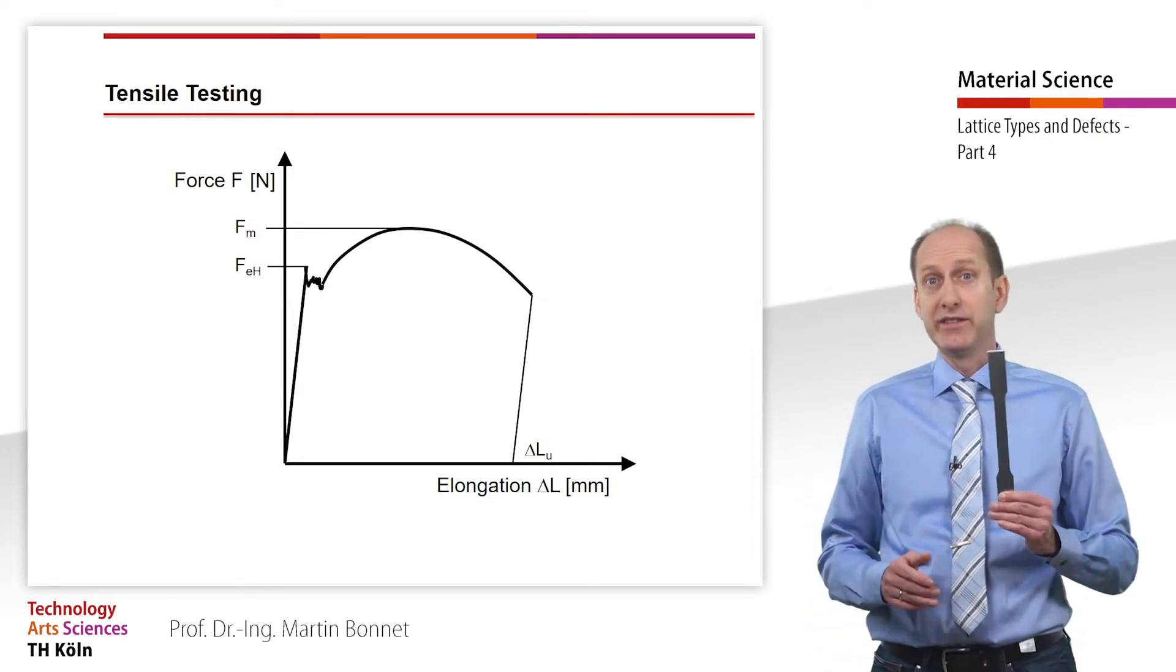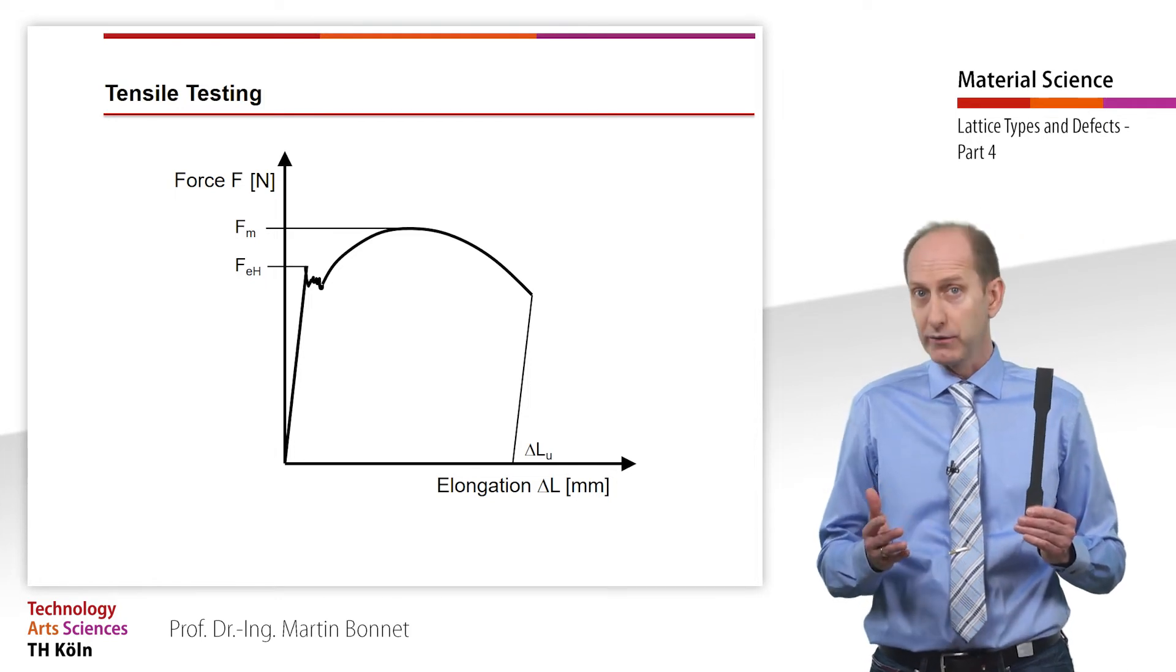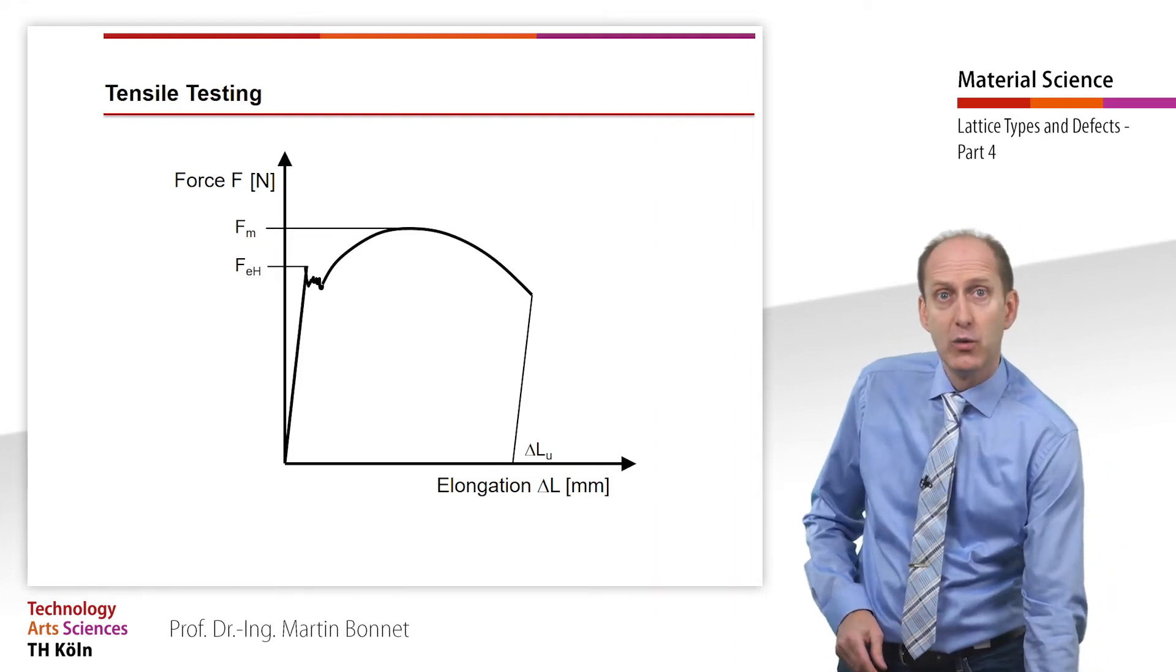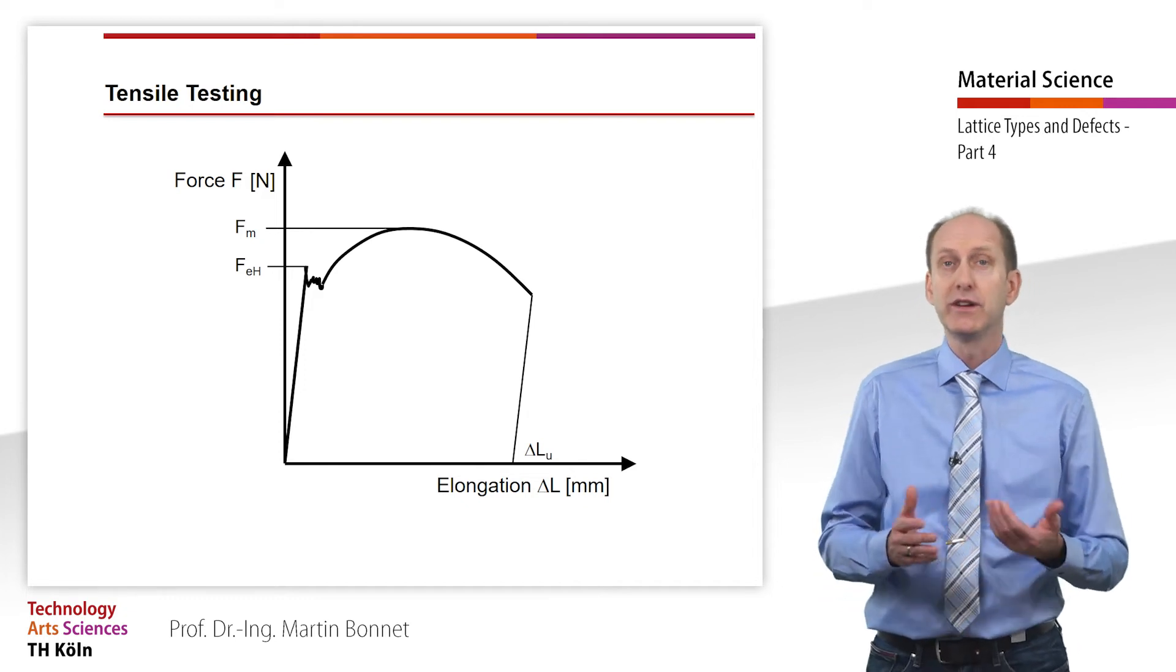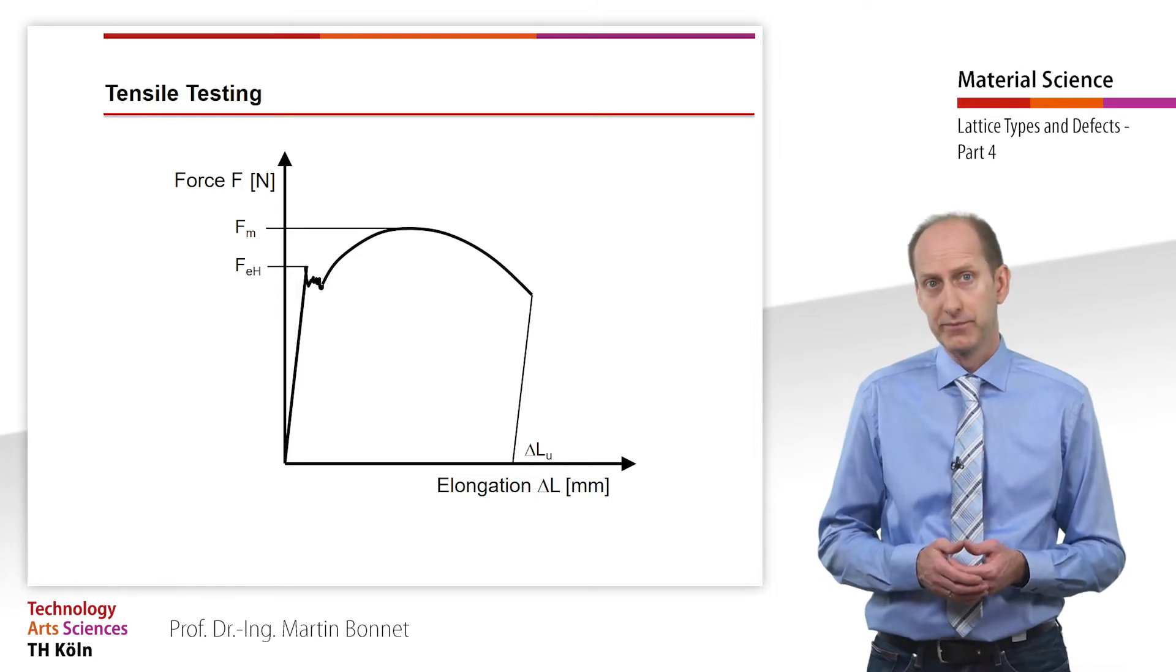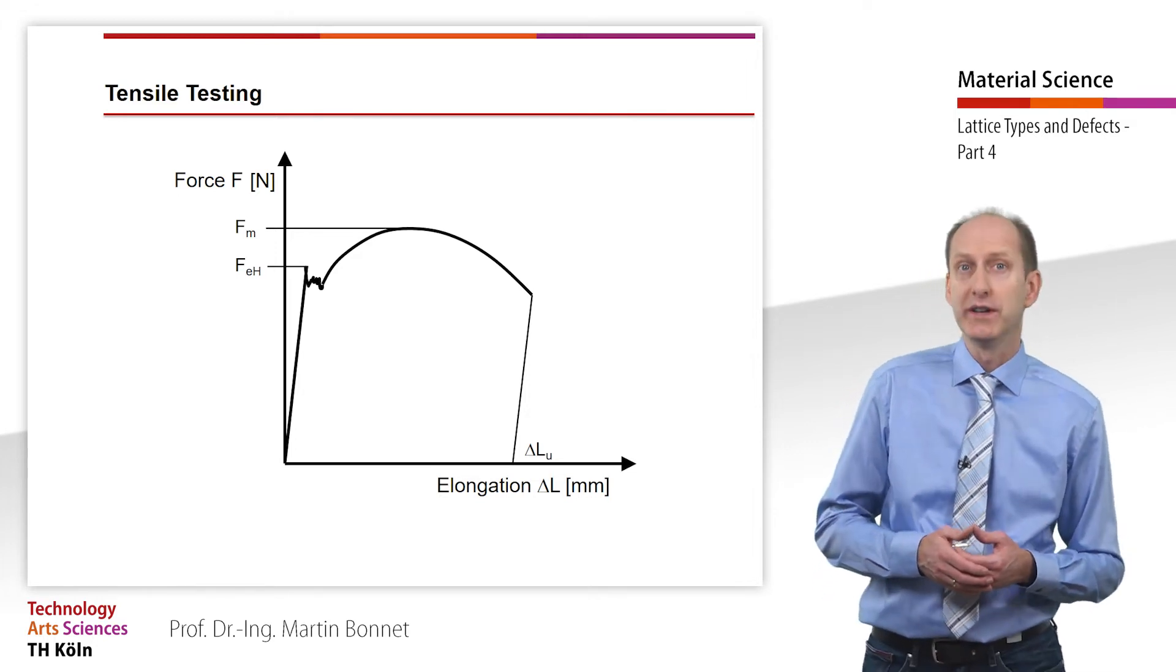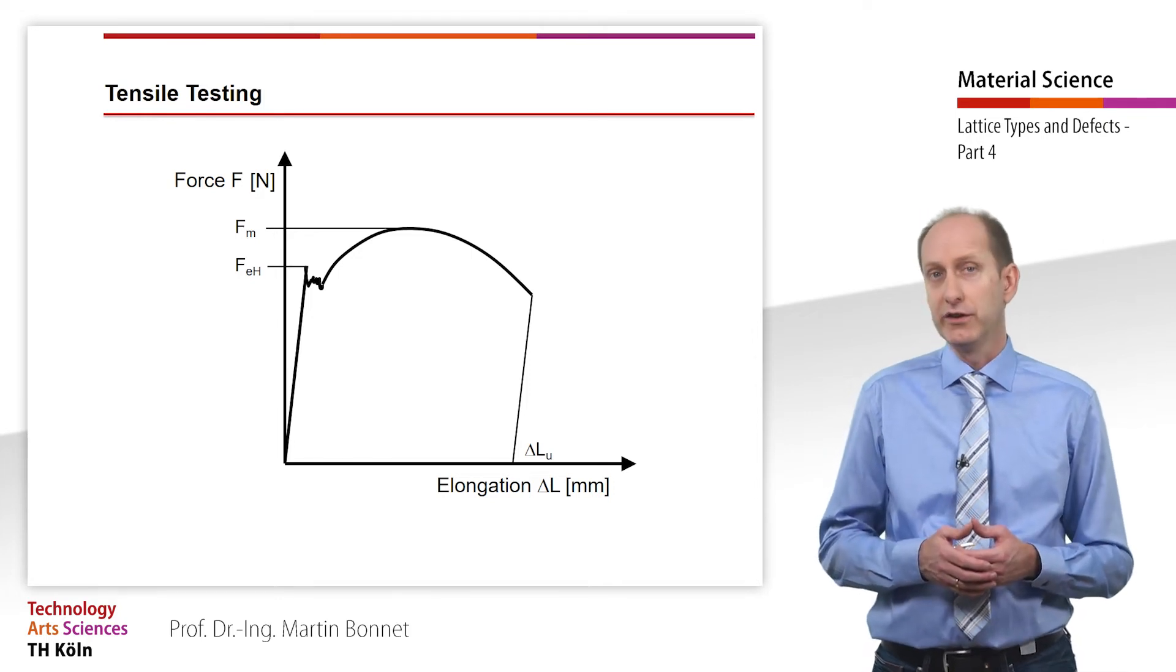A standardized sample of the material is clamped between two clamping fixtures and the sample is stretched at a standardized speed. The force F, which the sample resists the forced extension, is plotted in a graph against the elongation delta L of the sample. If a tensile test is carried out on a structural steel, in addition to the elastic elongation, a permanent elongation of the sample suddenly occurs at a certain stress.